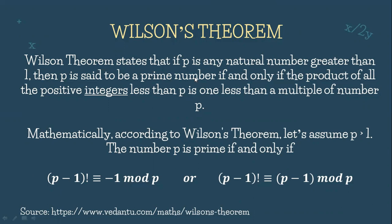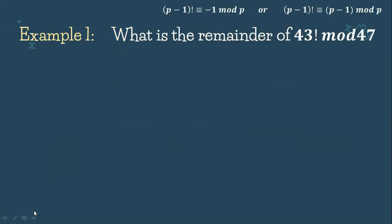To further understand what Wilson's Theorem is, let's have this example. What is the remainder of 43 factorial mod 47? Using Wilson's Theorem, let's first identify what P is. Here, our P is 47. So by the theorem, (P minus 1) factorial is congruent to negative 1 mod P.